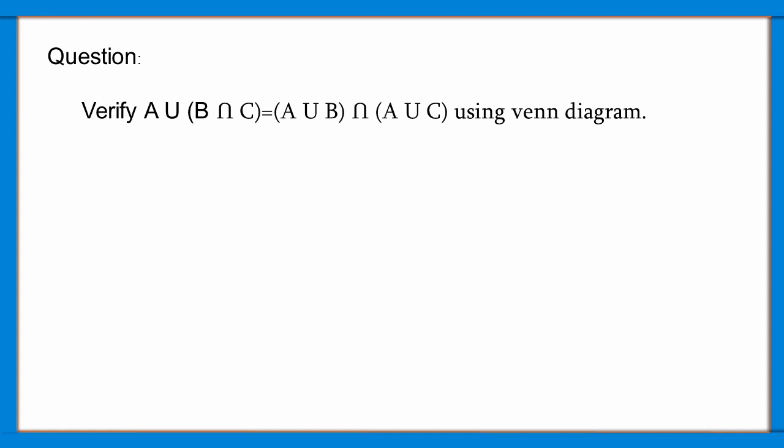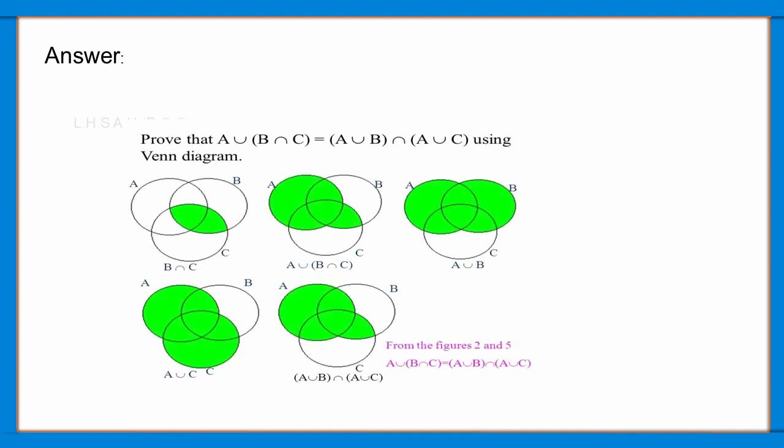Verify A union (B intersection C) is equal to (A union B) intersection (A union C) using Venn diagram. LHS: A union (B intersection C) is equal to RHS: (A union B) intersection (A union C).